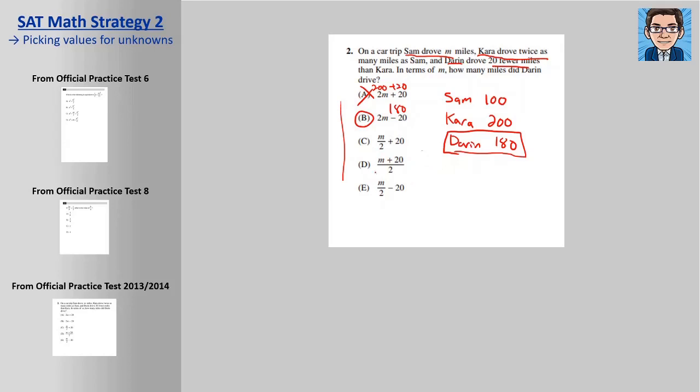just quickly check the others just to make sure. So 100 divided by 2 is 50 plus 20, that's not the answer. 100 plus 20 divided by 2 is 60, that's not the answer. And 100 divided by 2 is 50 minus 20, that's not the answer.